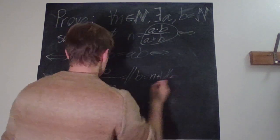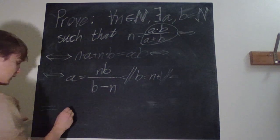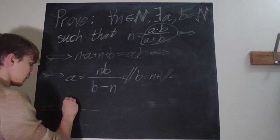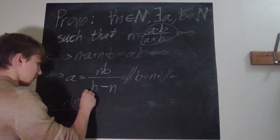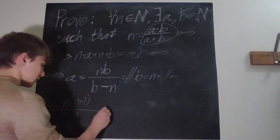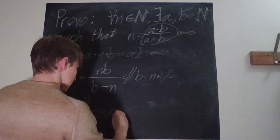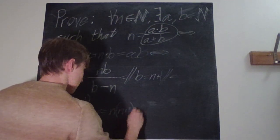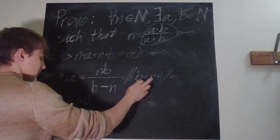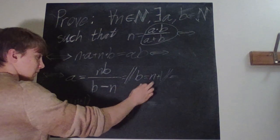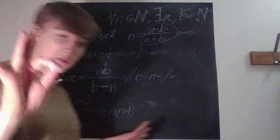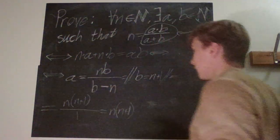Then we get that this thing is equal to... we have n times n plus one, n over n plus one minus n, so this is just one, so this is just n times n plus one. And we know that this is always an integer.